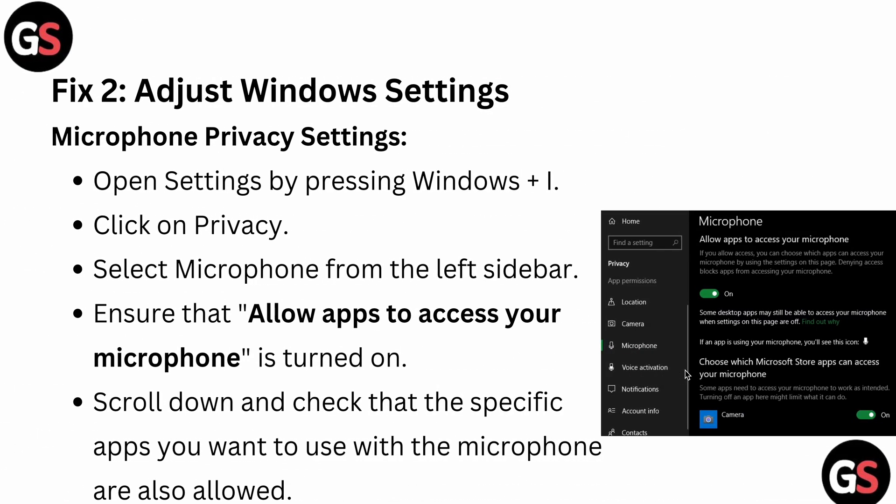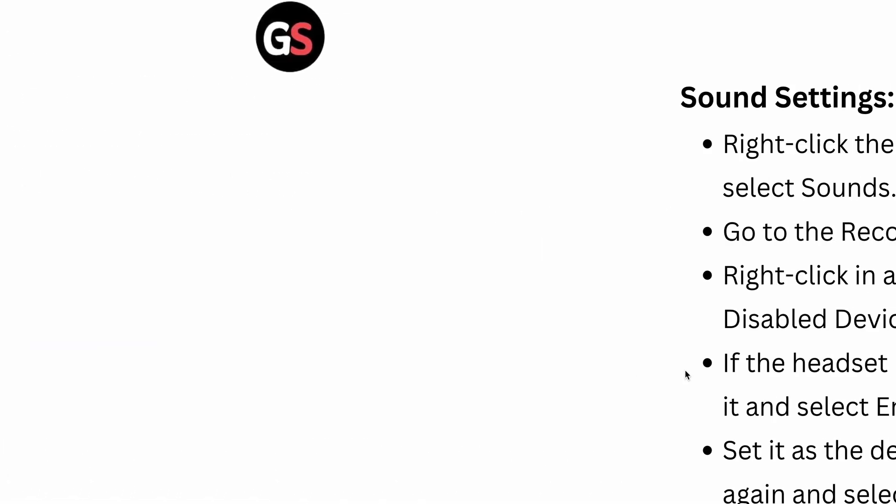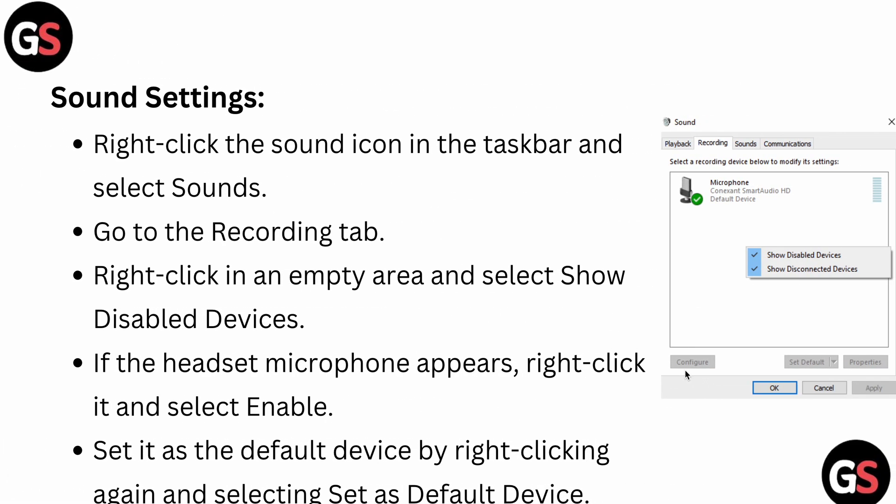Next, check the Windows microphone privacy settings. Open Settings by pressing Windows + I, then go to Privacy and select Microphone from the left sidebar. Ensure that 'Allow apps to access your microphone' is turned on. Scroll down and check that the specific apps you want to use with the microphone are allowed.